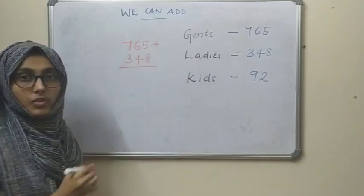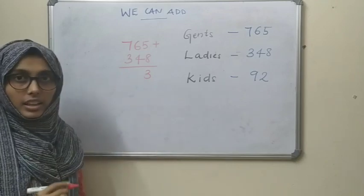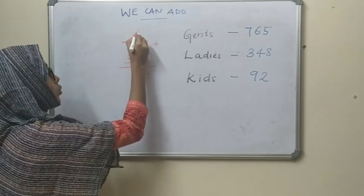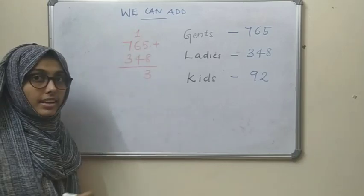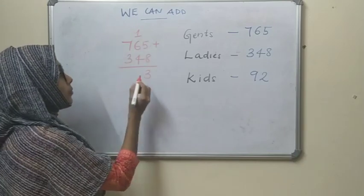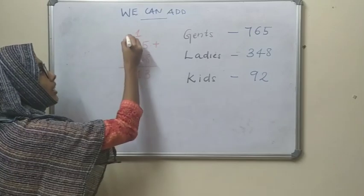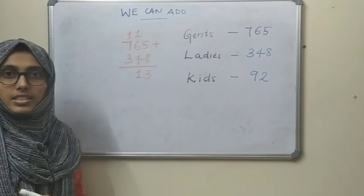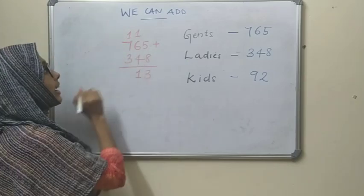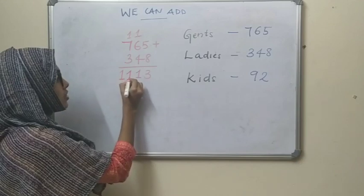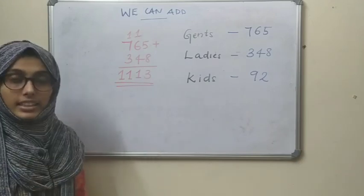8 plus 5 is 13 — write 3 and carry 1. Now 6 plus 1 is 7, and 7 plus 4 is 11 — write 1 and carry 1. Now 7 plus 1 is 8, and 8 plus 3 is 11. So 765 plus 348 equals 1113.